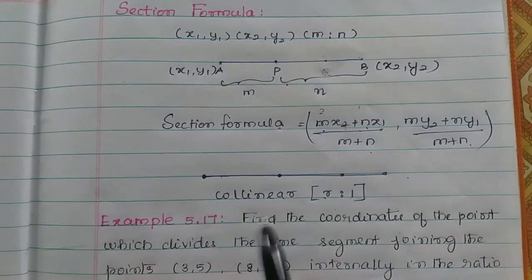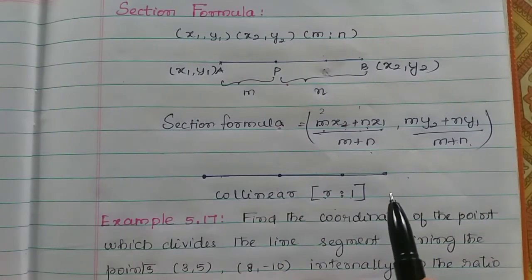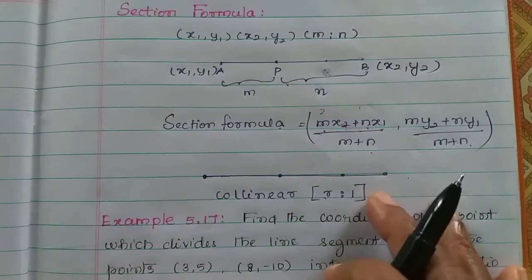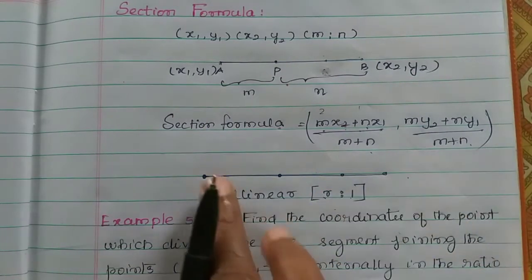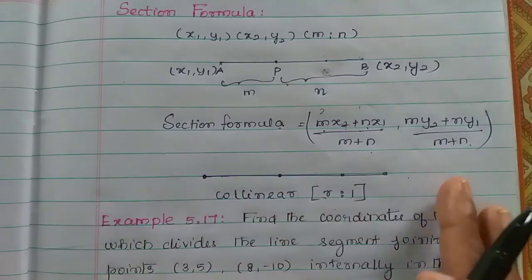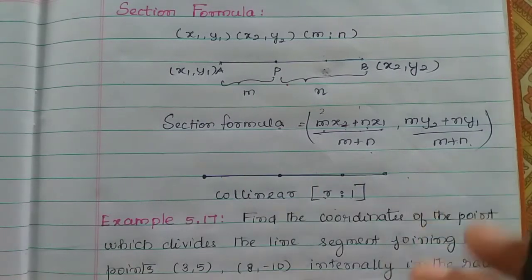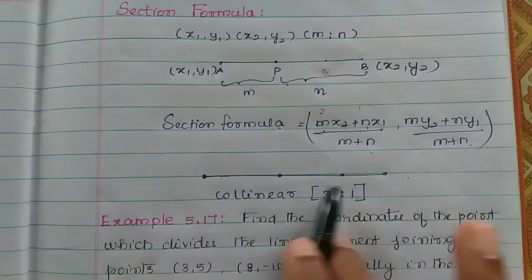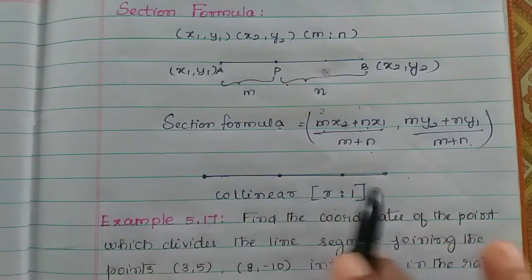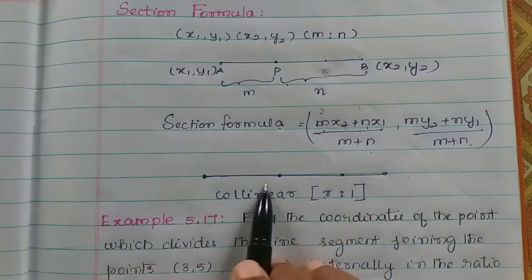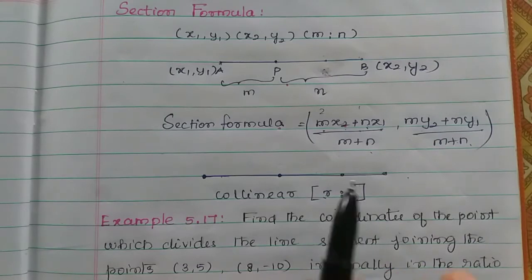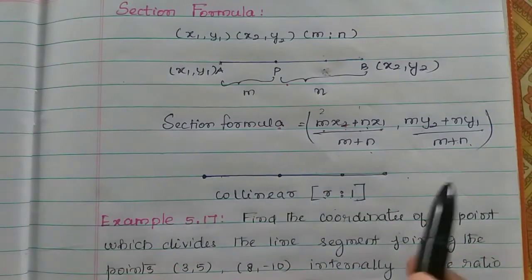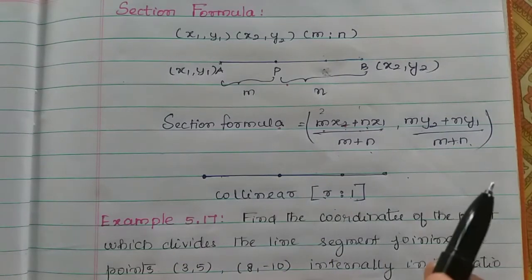If three points are collinear, then one of the points divides the line segment joining the other two points in the ratio r to 1. In the two points, there is a ratio of r to 1 if all three points are collinear.